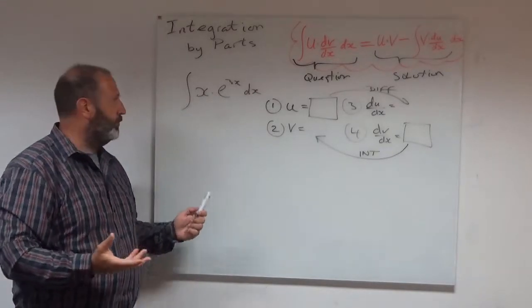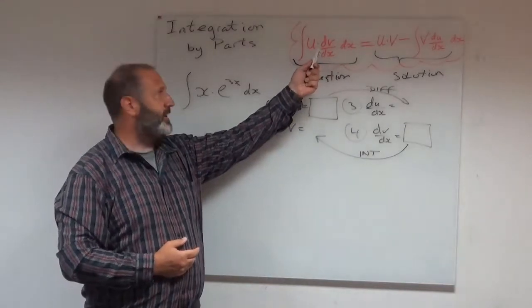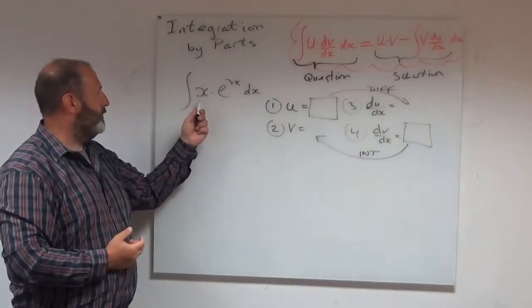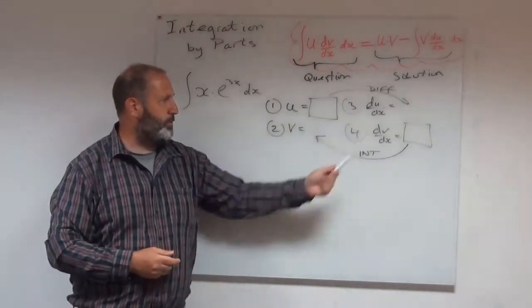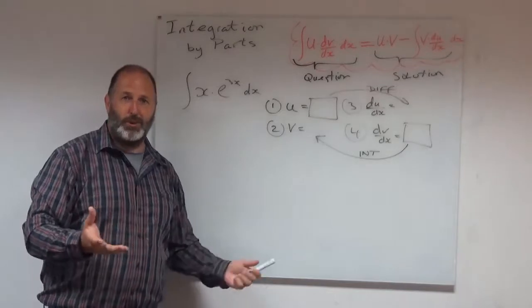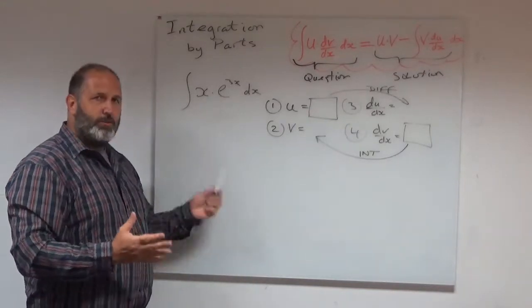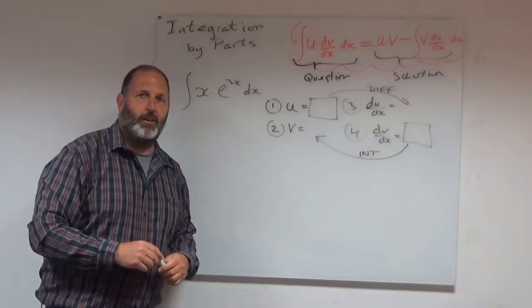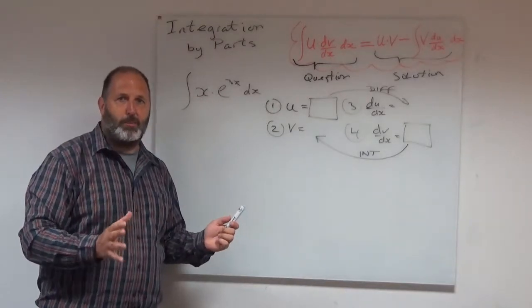So next question, which is which? In the formula in red, it says u dv dx. So does that mean that whichever the first term is, that goes in there for u and the second term must be the dv dx? Well, possibly, but not necessarily. There is a nice way of working out which should be u and which should be the dv. And I tend to use an acronym called LIATE. And perhaps we'll go into that in a separate video.